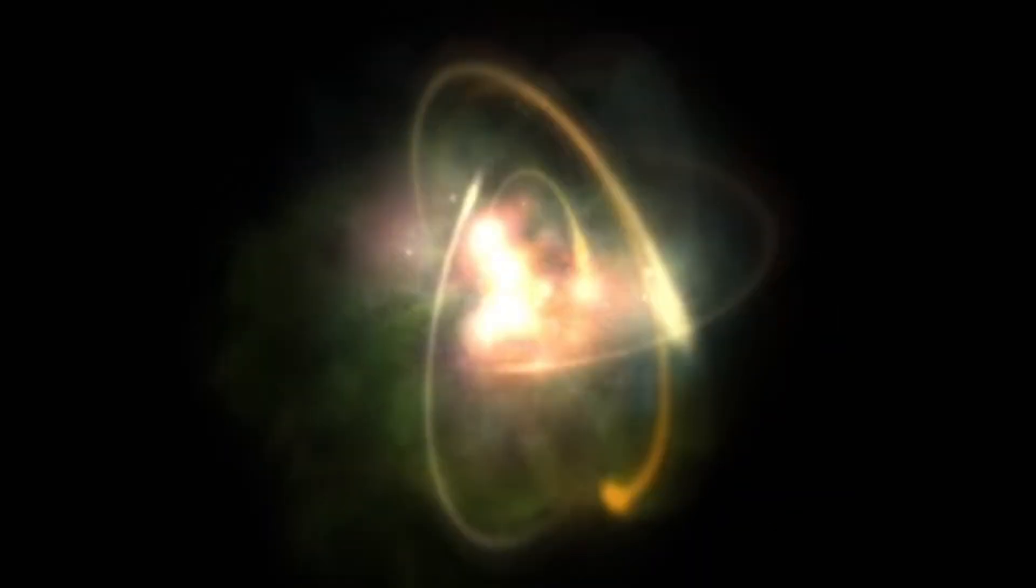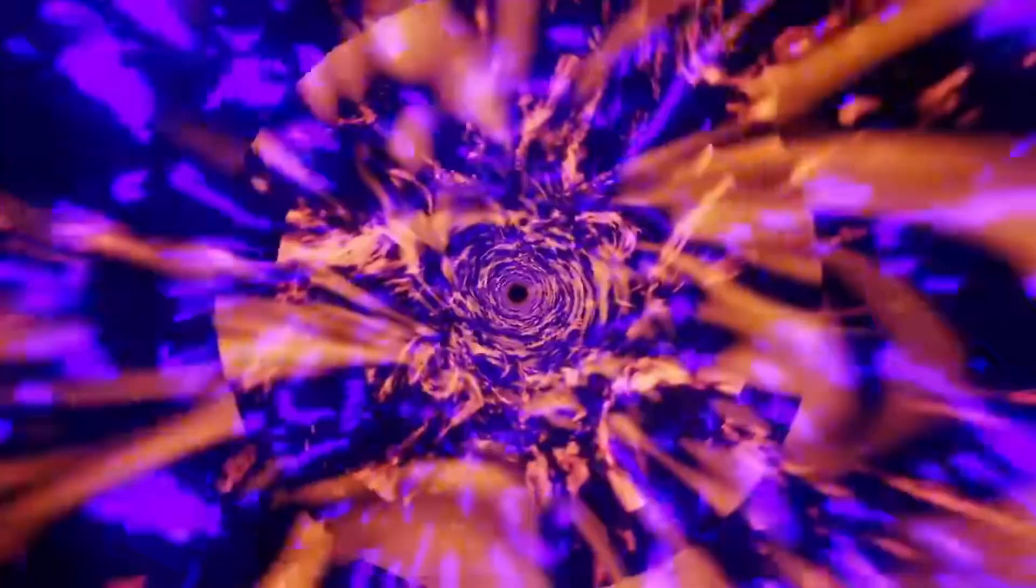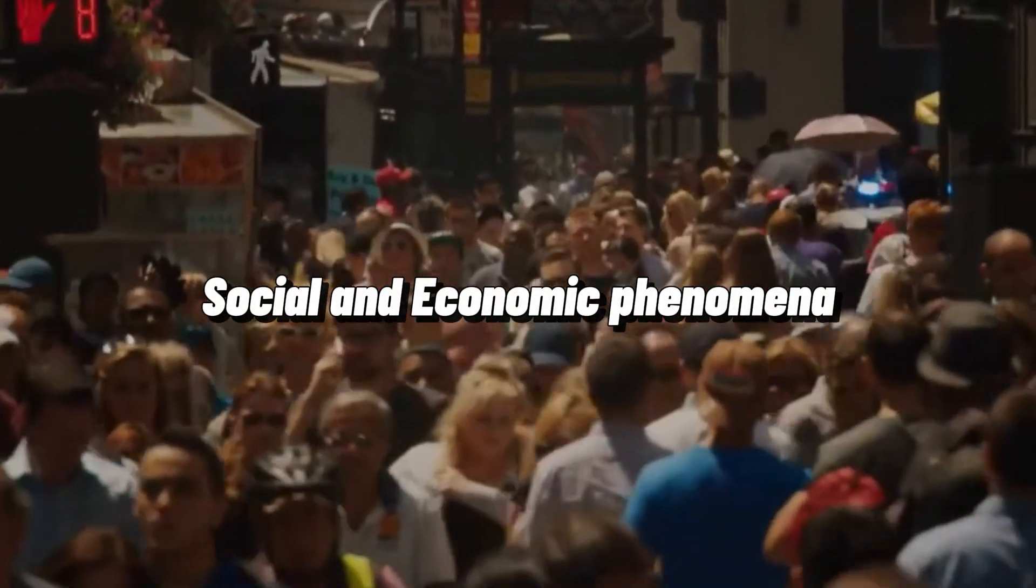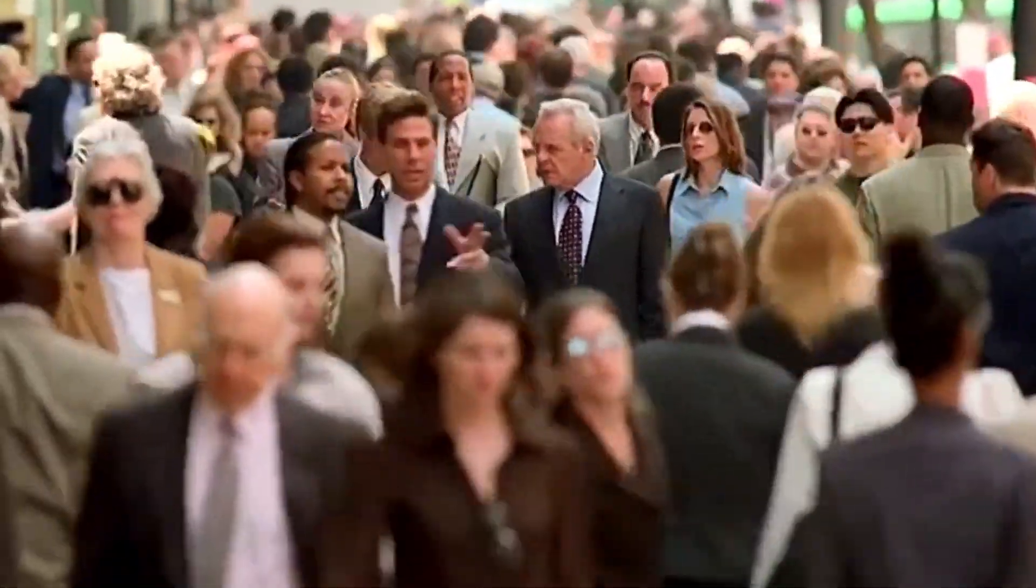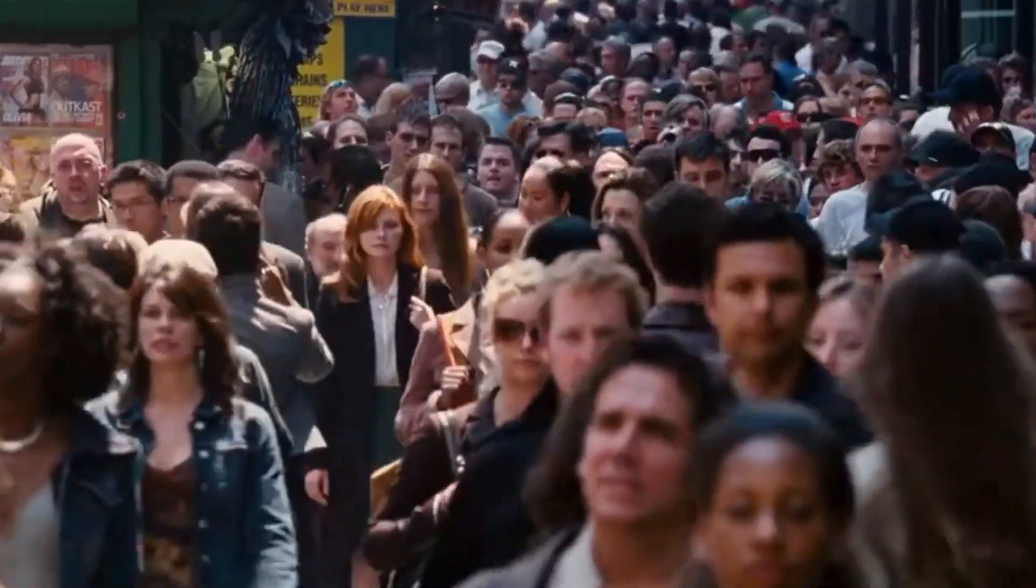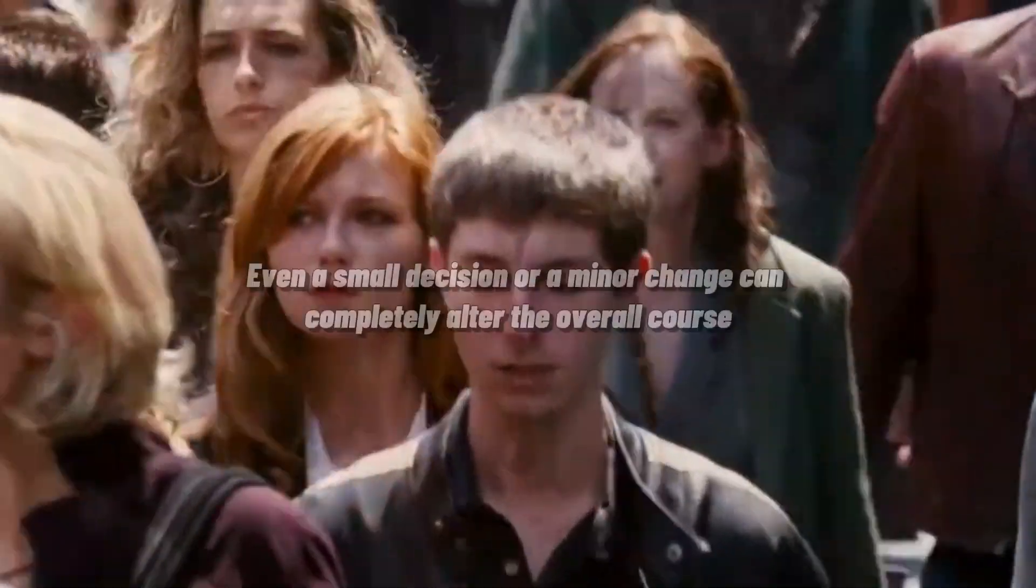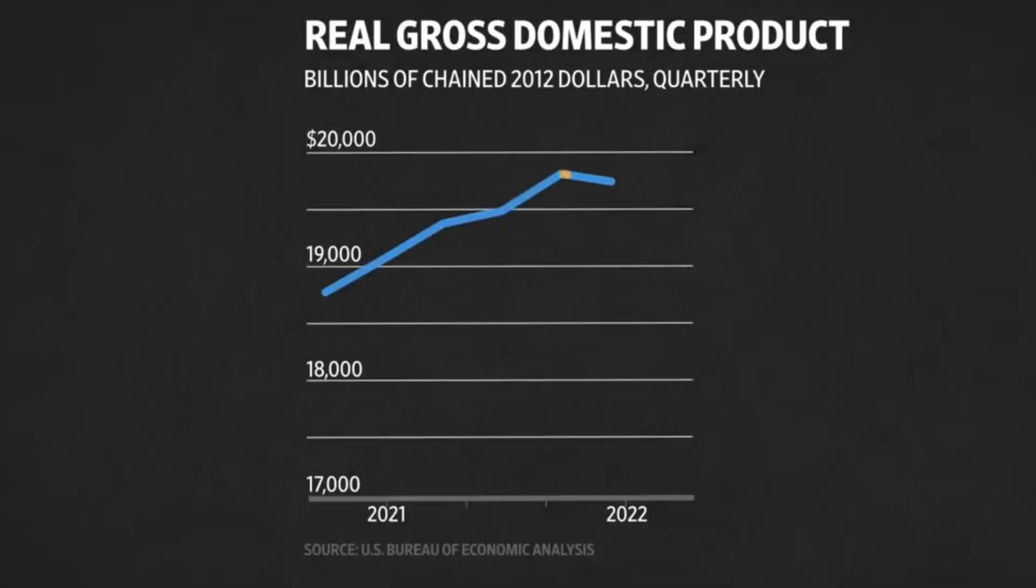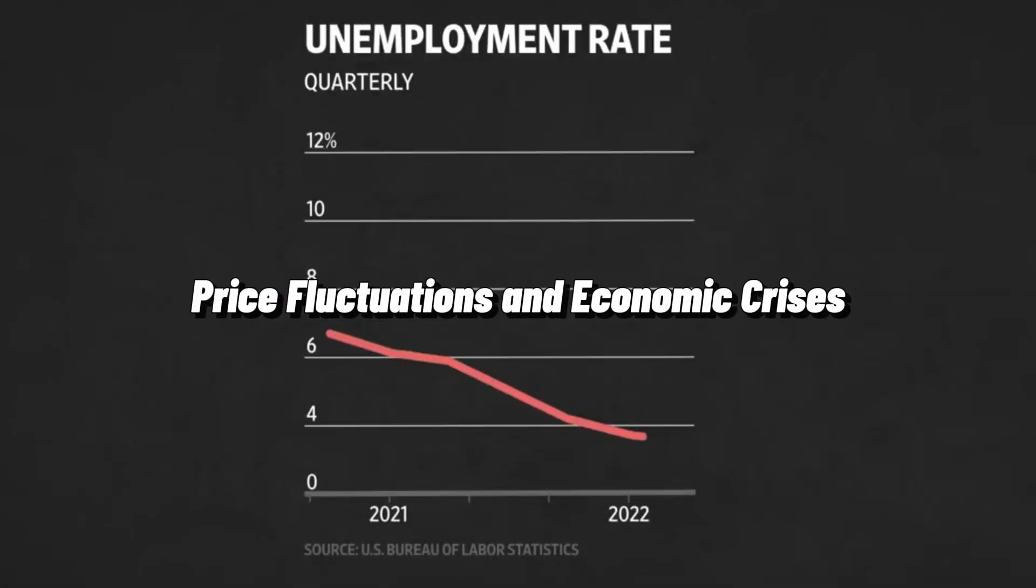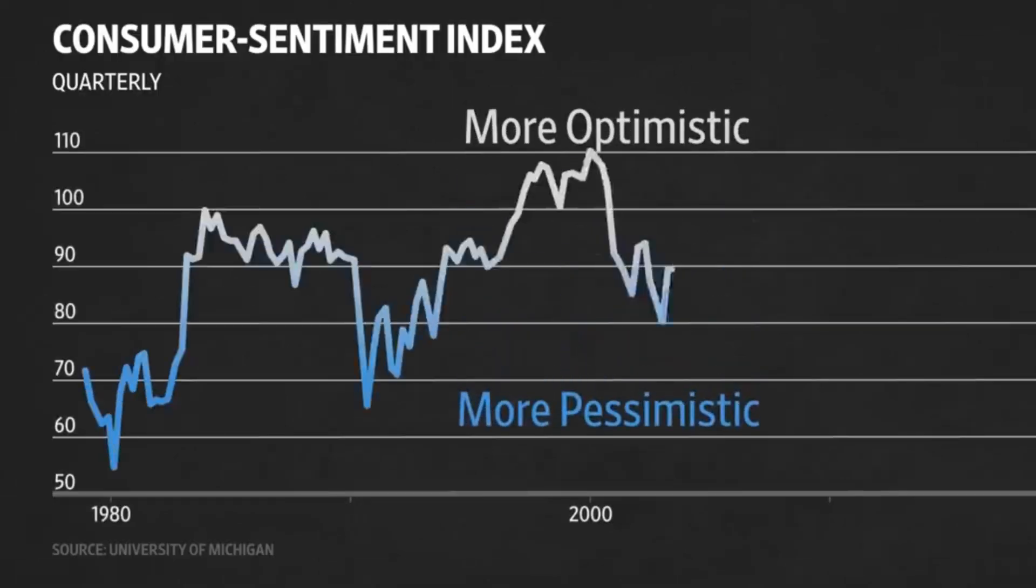The uncertainty principle is usually associated with the microscopic world. But if we look closer, we can find its effect even in the everyday world and on larger scales. For example, in social and economic phenomena, we witness random interactions and unpredictability that are very similar to the uncertainty at the quantum level. In society, predicting the behavior of individuals or groups is extremely difficult. Even a small decision or a minor change can completely alter the overall course. The same applies to economics. Price fluctuations and economic crises, which sometimes seem to appear out of nowhere, can exhibit the same characteristics of uncertainty.